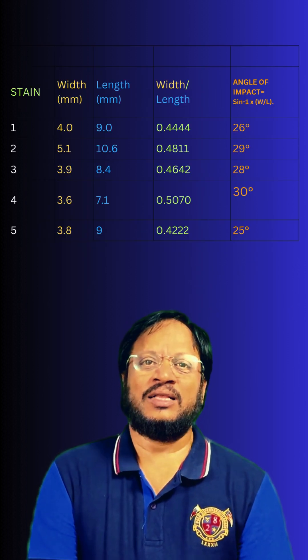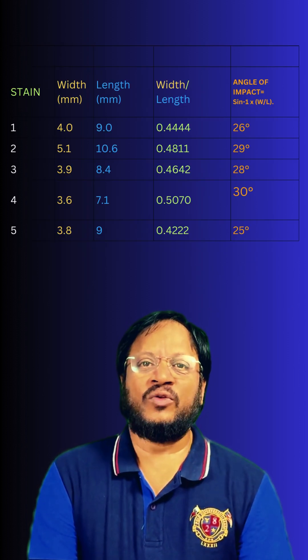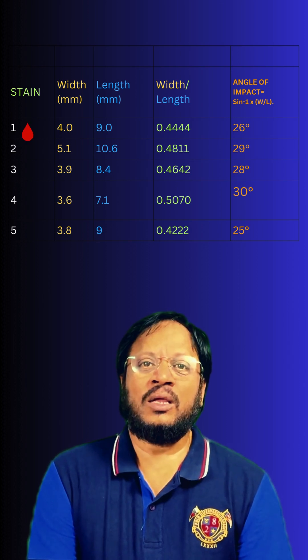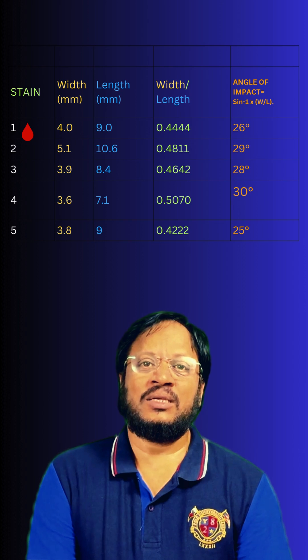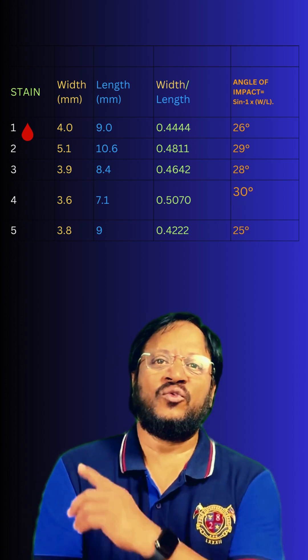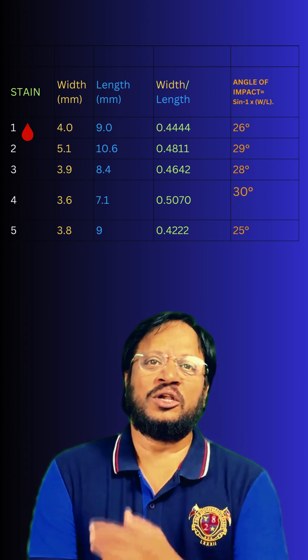Here are the results we got from our data. Stain 1: width 4 millimeters, length 9 millimeters, its value is 0.4444, at 26 degrees.